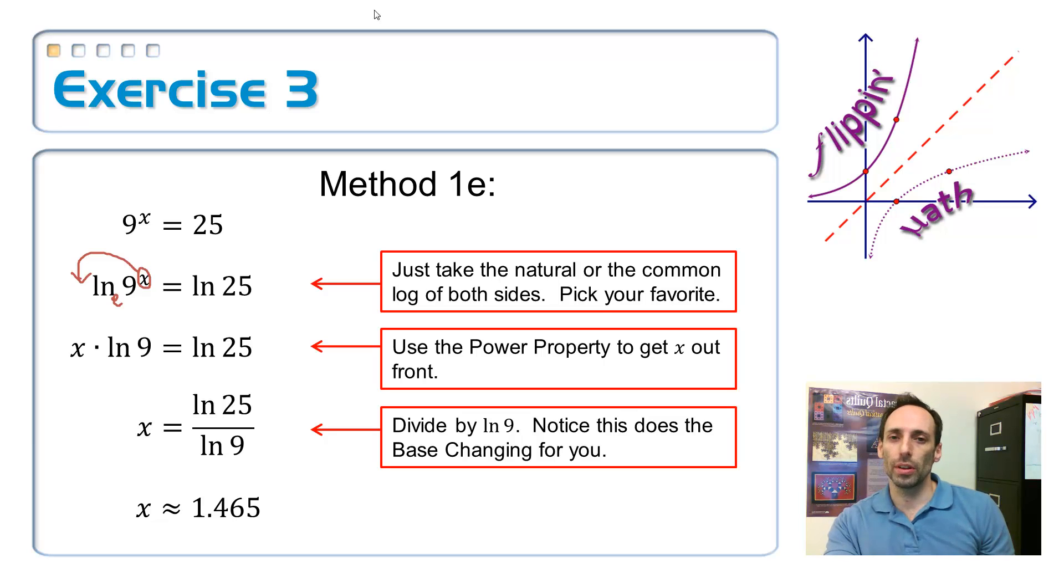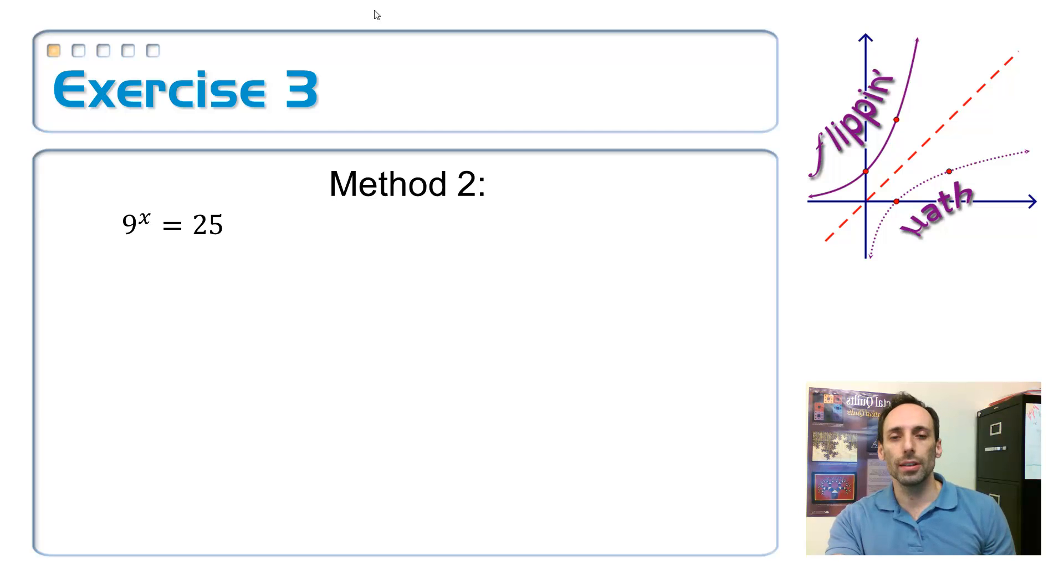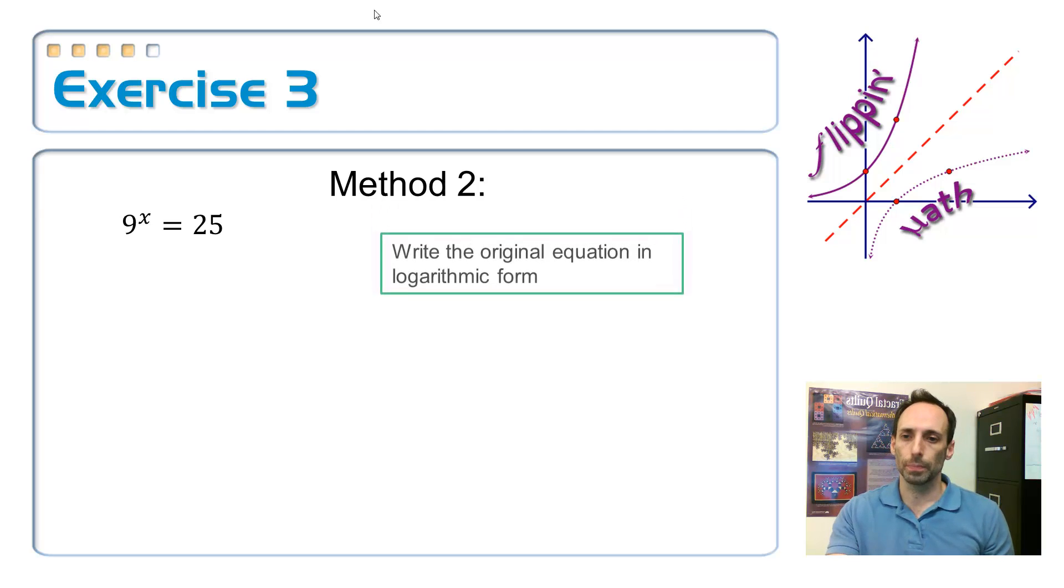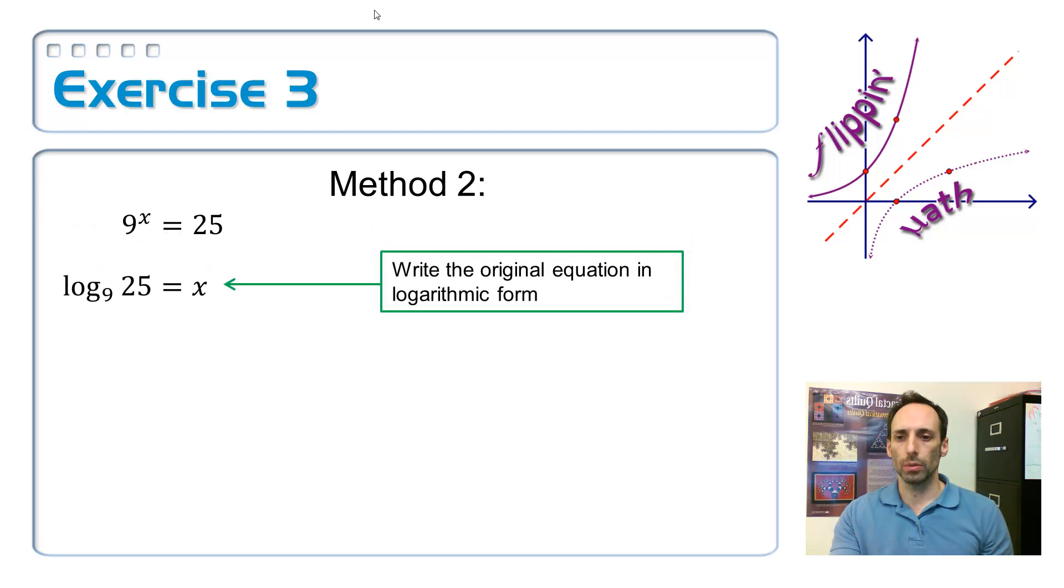Okay, so then the second method was, well, why don't you just rewrite it in logarithmic form? So, if I still have the same exact problem, 9^x is equal to 25. Writing it in logarithmic form, the base of the log should be 9. So, you write it as the log base 9 of whatever your answer is, so 25, should be equal to x. There we go.